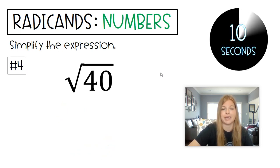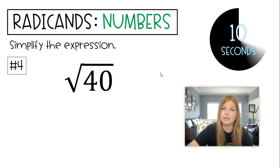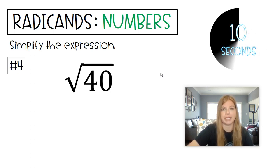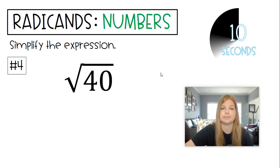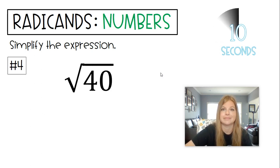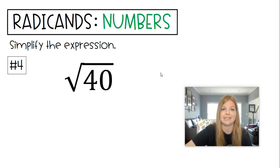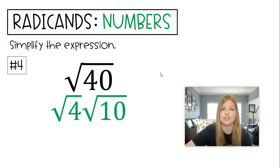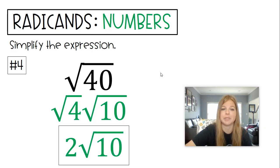Next one, Radical 40. Remember, you're thinking: what's the biggest perfect square that divides into 40? Should be Radical 4 times Radical 10, which becomes 2 Radical 10.